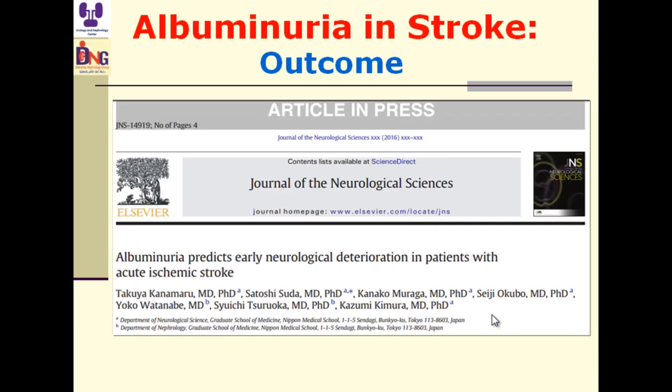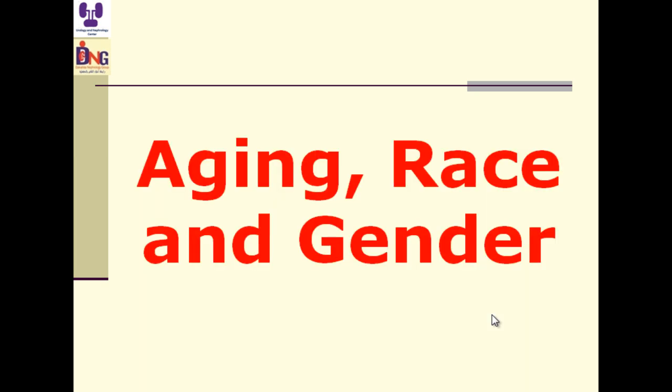A recent article showed albuminuria predicts early neurological deterioration in patients with acute ischemic stroke. Albuminuria is within the definition of CKD and can also be considered a risk factor for CKD progression. The conclusion is that we should stress on following up and looking at albuminuria.